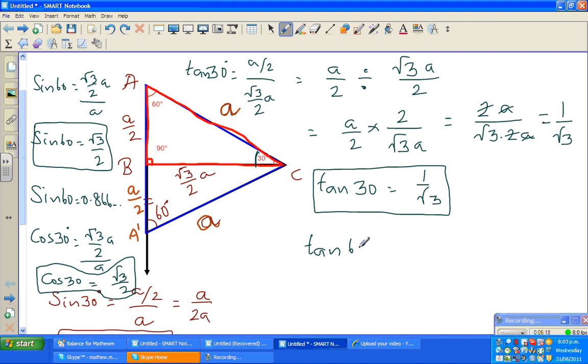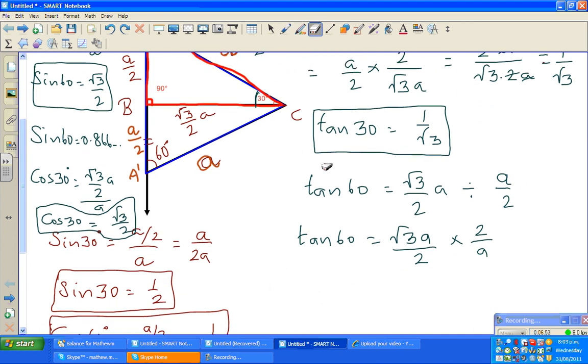Now tan 60 is, tan 60 is, for this 60 degree, this is the opposite and this is the adjacent. So this is root 3 over 2A divided by, this is opposite and divide by adjacent, that is A over 2. So tan 60 will become root 3A over 2 times 2 over A. Whenever you change the division to multiplication, you swap the number over. So this 2 and this 2 will get cancelled and this and this will get cancelled. So tan 30, tan 60 sorry, is root 3. Now there's a different way to remember, I'll explain that later on. So this is how we have done for tan 30 and tan 60.